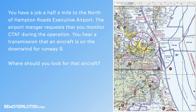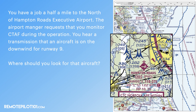Going back to the figure, let's say you get a scenario question: you have a job to take video a half mile to the north of the Hampton Roads Executive Airport, and the airport manager has requested that you monitor the common traffic advisory frequency. You hear a transmission indicating that an aircraft is on downwind for runway nine. Where should you look for that aircraft? We recall that the top of the chart is north, and unless indicated with the letters RP for right pattern, turns are to the left. An aircraft landing on runway nine would be landing to the east. Downwind is 180 degrees opposite, so the airplane on downwind would be on a westerly heading — 270 — which puts them north of the airport.